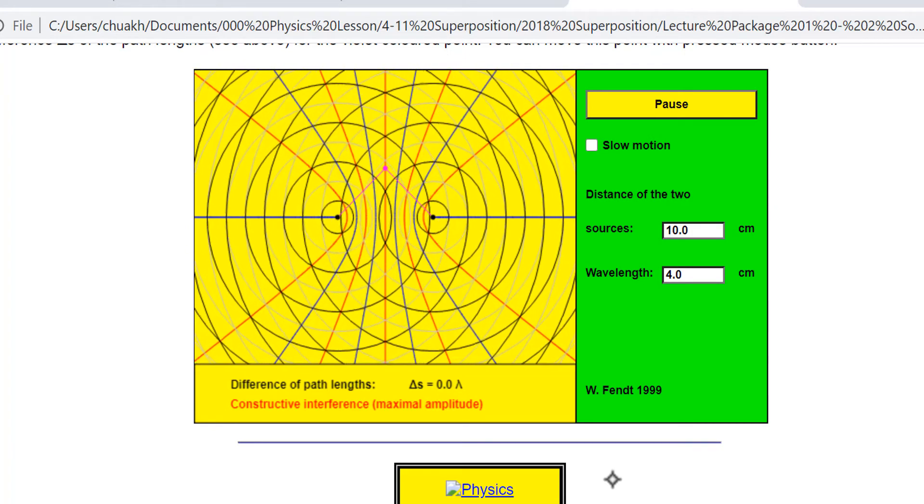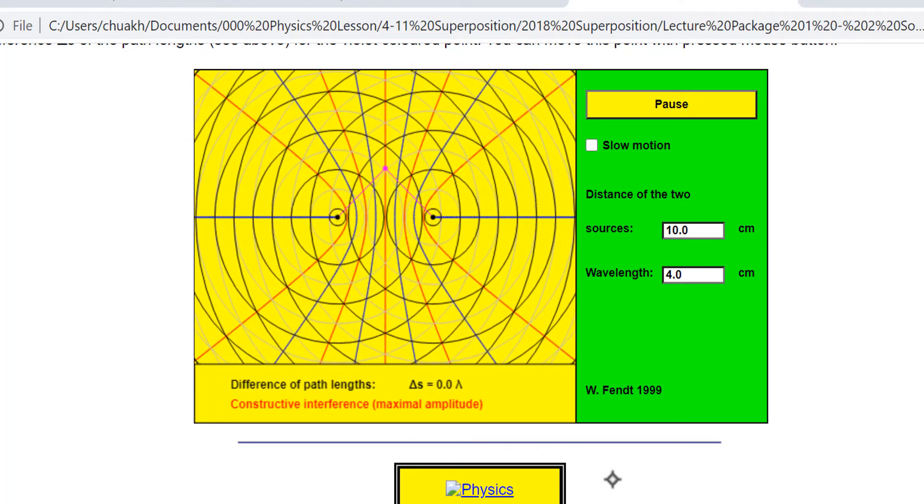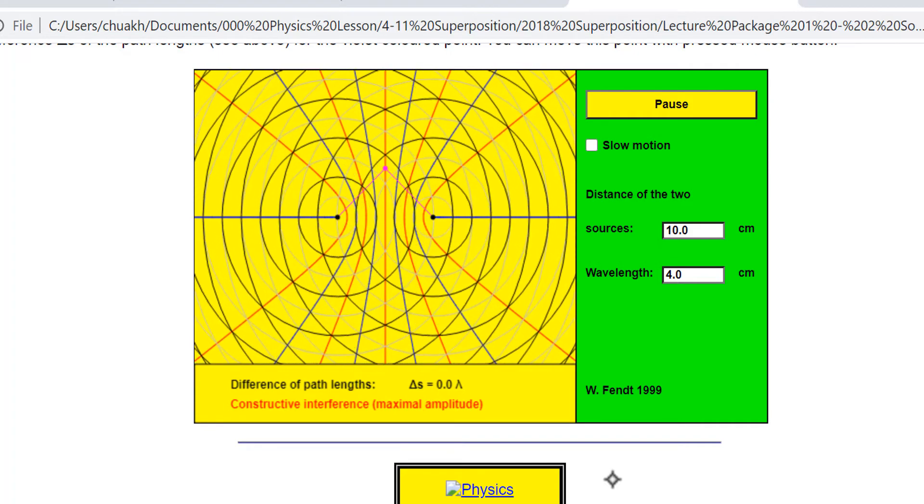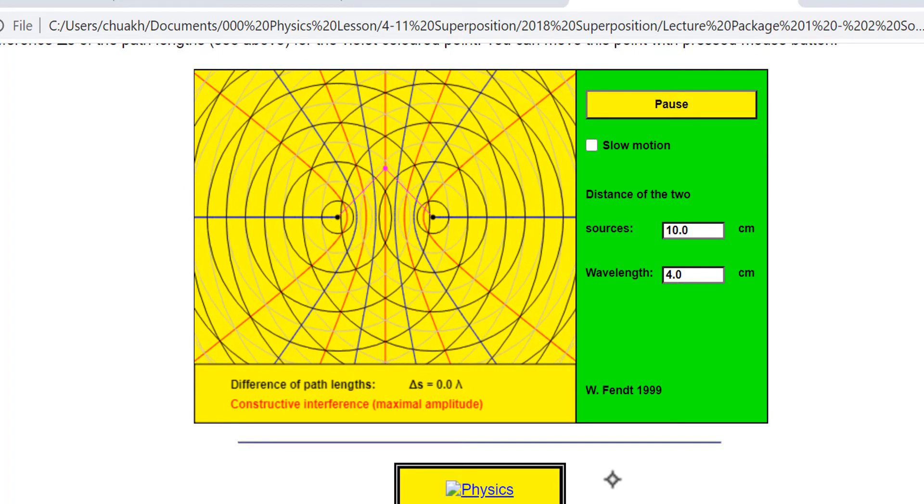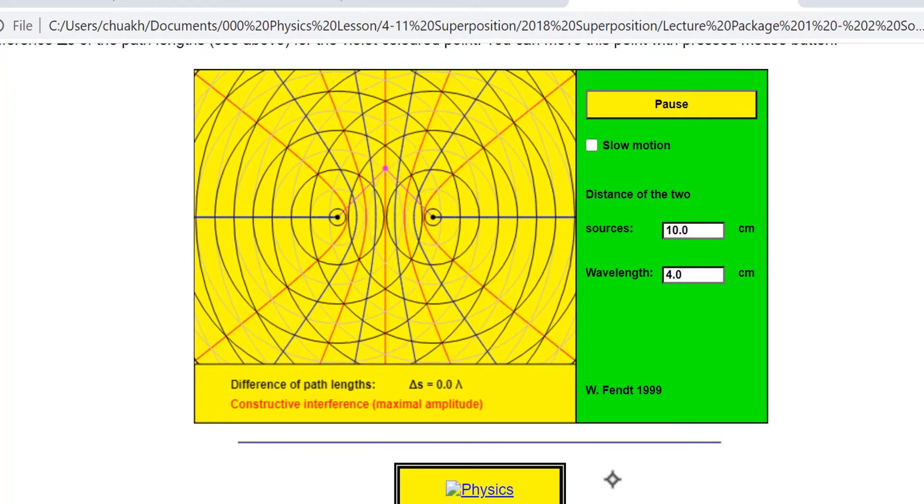So that's why the amplitude of the oscillation at this point here is very large. It's maximum. Because you have both the very large positive displacement when crest meets crest, and also the very negative displacement when trough meets trough.